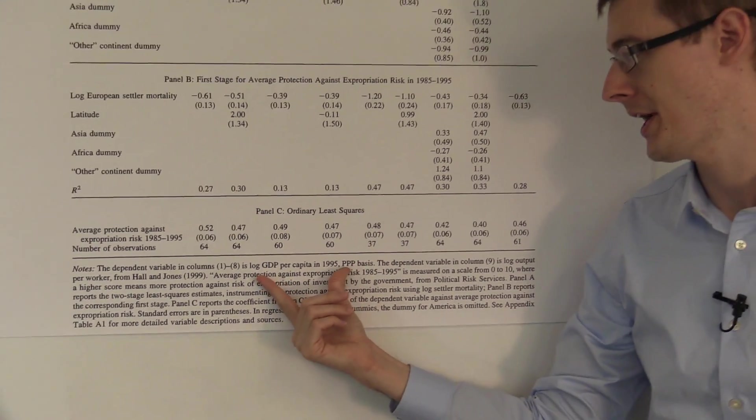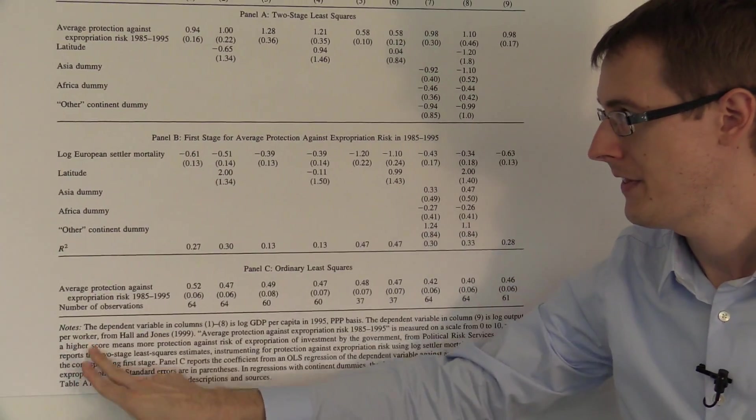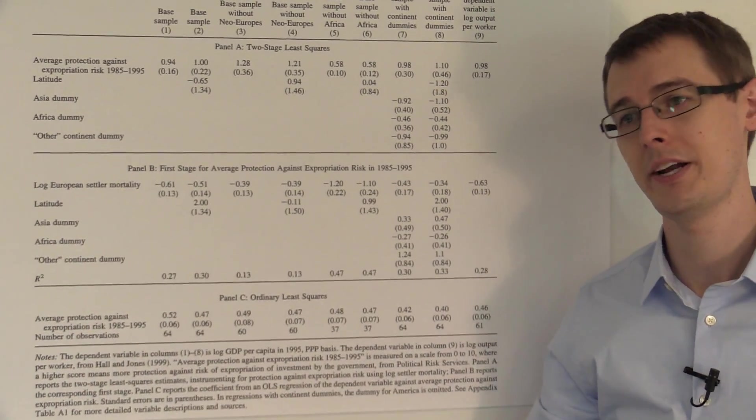So that's our outcome variable, GDP per capita. Over here, these are the right-hand side variables, or our explanatory variables.